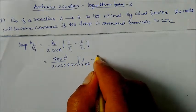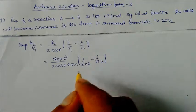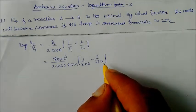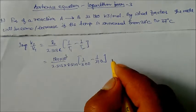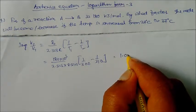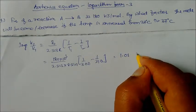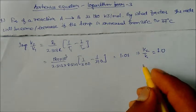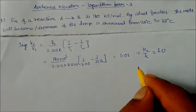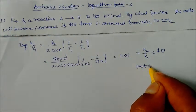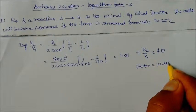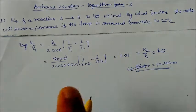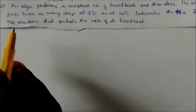Using temperatures 300 K and 310 K, on solving we get log(K2/K1) = 1.01, so K2/K1 is equal to 10. Therefore the rate increases by a factor of 10. That is our answer.